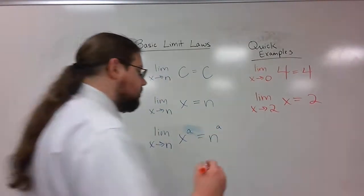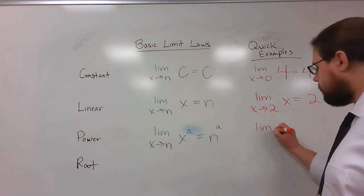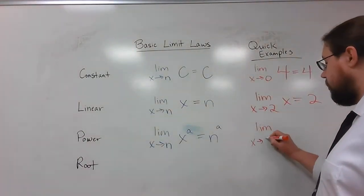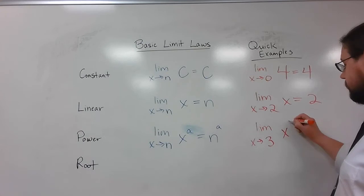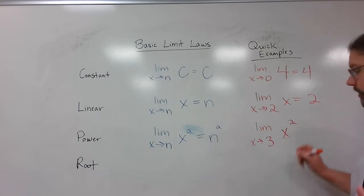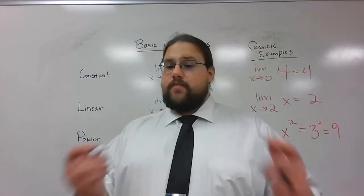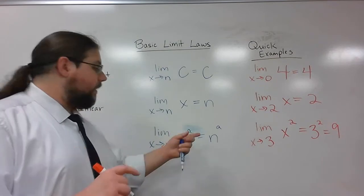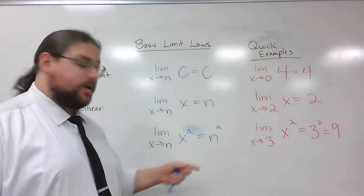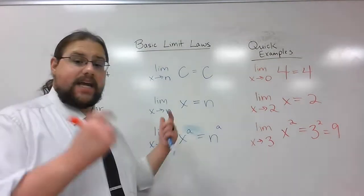Let's look at a good example. If I have the limit as x approaches 3 of x squared, well, all I'm going to have to do is plug it in, essentially. 3 squared is 9. Very straightforward. If it's going to any power, it doesn't matter what the power is. All you really have to do is plug it in and do the exponent.